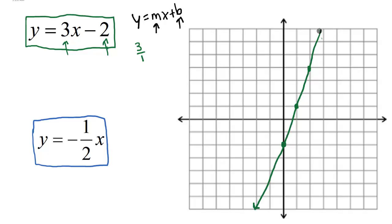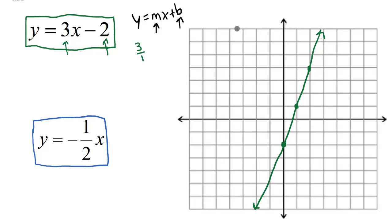Now that we have our line drawn, we can determine whether it's a function using the vertical line test. We run vertical lines through the diagonal line, and because each vertical line only crosses the green line at one point, we can say that it is a function. If it crossed at two points for some reason, then it wouldn't be a function.